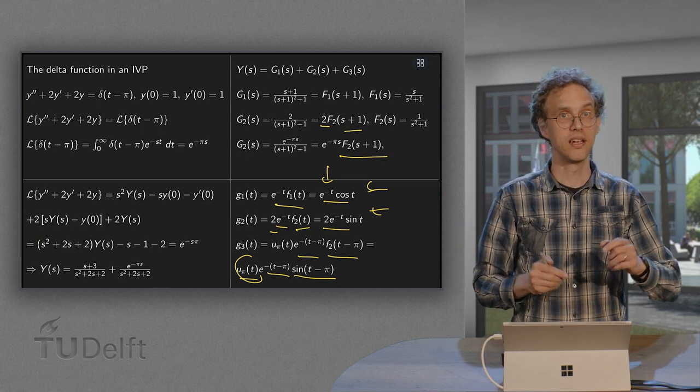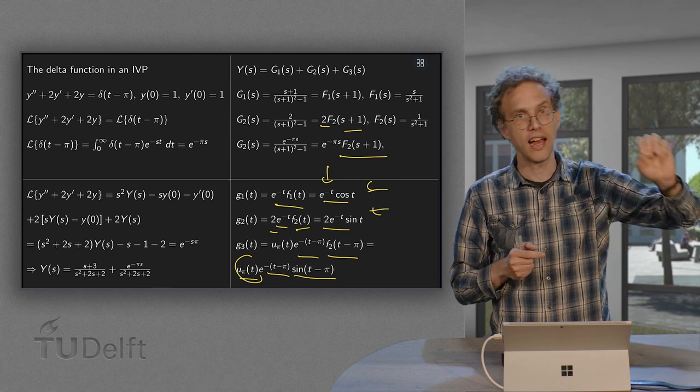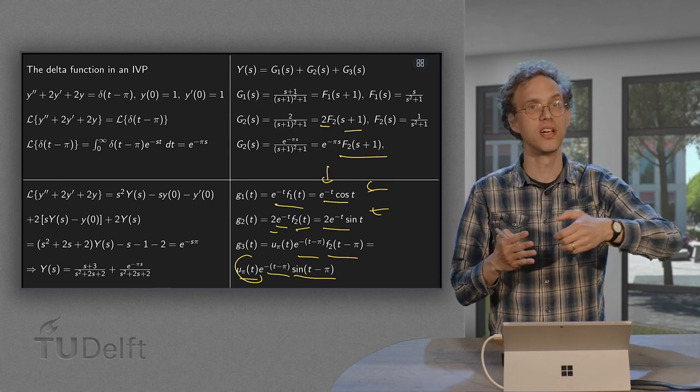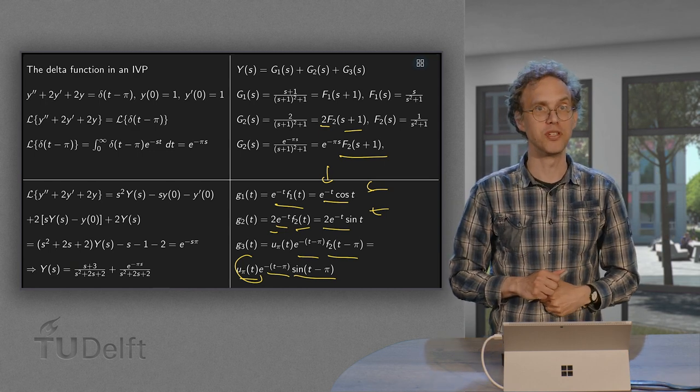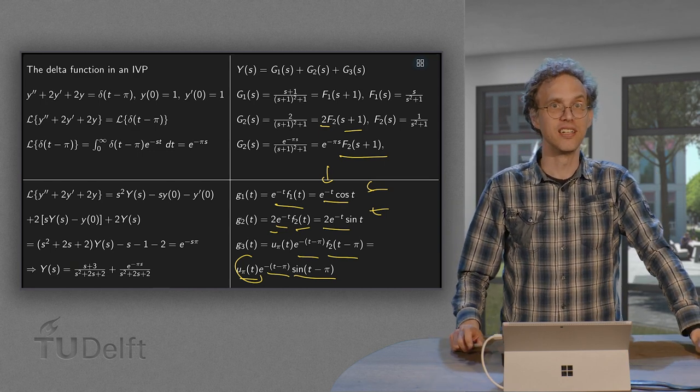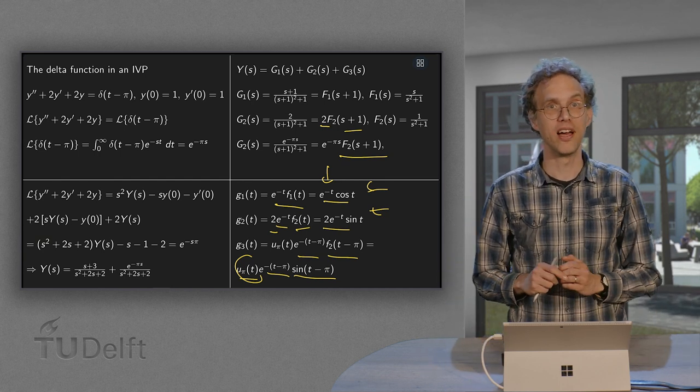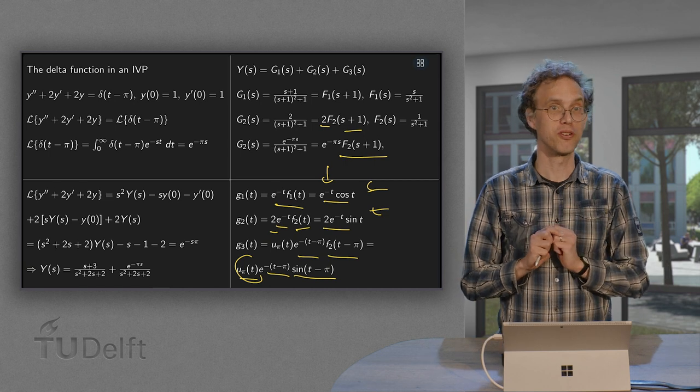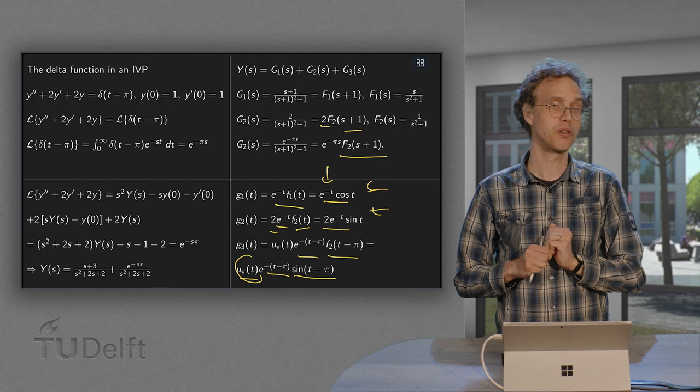So what's happening? You start with some waves which are damped. And then at t equals pi, you give an impulse. And you get a next wave starting, which is then also damped away. Okay, so hopefully this is what your physical intuition also told you. If not, of course, we have the mathematics and you can just do all the computations and see what comes out.